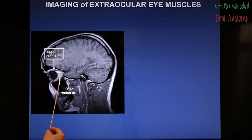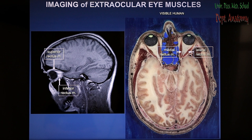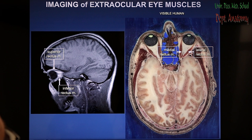In the sagittal slice, the superior and inferior rectus are clearly recognizable. This is also a real preparation from the Visible Human project — a person who was sliced in very thin sections — and in horizontal cut the medial and lateral rectus muscles are clearly recognizable.